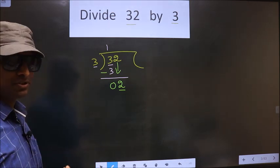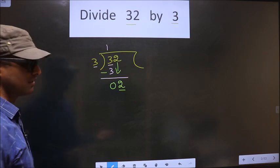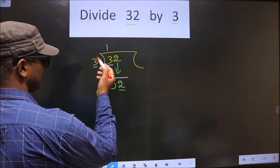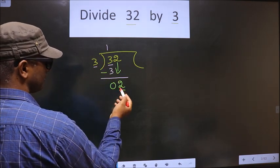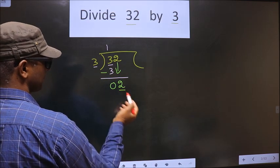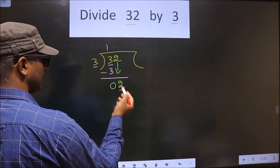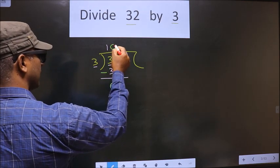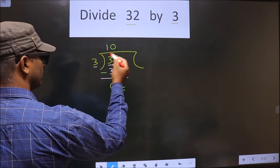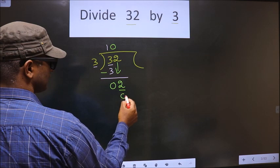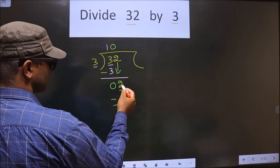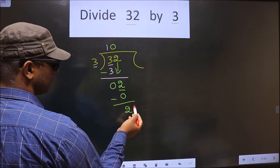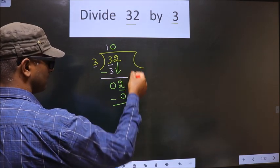Instead, what you should think about is: here we have 3. This should be multiplied by what to get a number here? If I multiply by 1, I get a number that is more than this, so I should multiply by 0. So 3 into 0 is 0. Now you subtract, you get 2. Here you did not bring any number down.